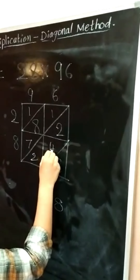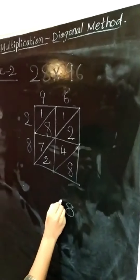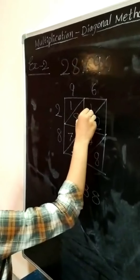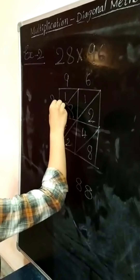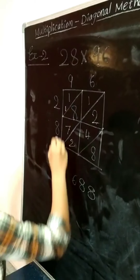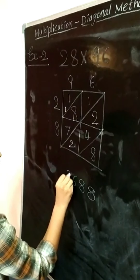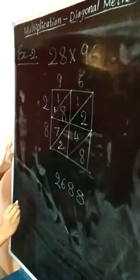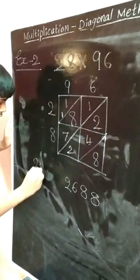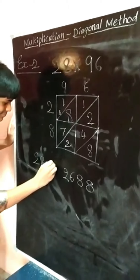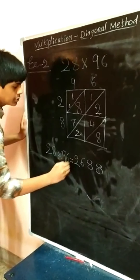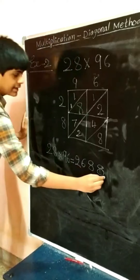2+4=6, 6+2=8. 7+8=15, 15+1=16; carry 1 forward, write 6 here. 1+1=2. So 28 into 96 is equal to 2688.